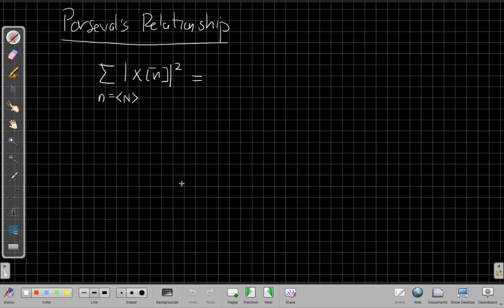And the last one I'll mention is we still have a Parseval's relationship. The big picture is the same, which says if I take the sum over all time of the magnitude of x of n squared, I'll have the integral over the one period. I just need to worry about one period of x of e to the j omega. I take the magnitude squared of that, d omega.